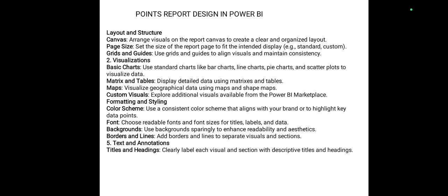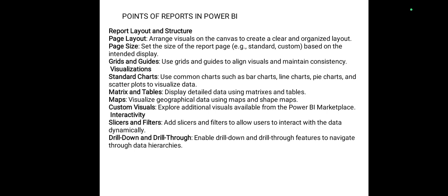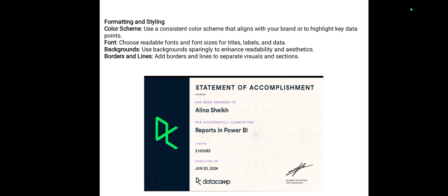Points of dashboard designing in Power BI include layout structure — canvas page size, grids and guides — and visualizations such as basic charts, matrix, tables, maps, and custom visuals. Formatting and style include color scheme, font, background, borders and lines, and text. Accessibility and keyboard navigation are also covered. Points of reports in Power BI similarly include layout structure, page layout size, grids and guides, standard charts, matrix, tables, maps, custom visuals, slicers and filters, formatting style with color scheme, font, background, and borders and lines.